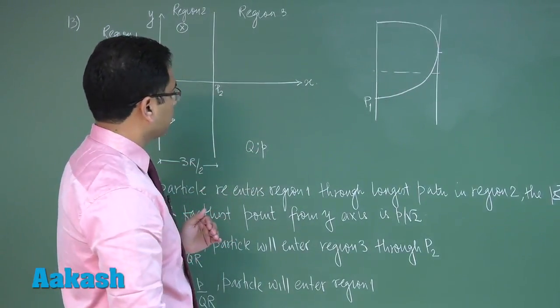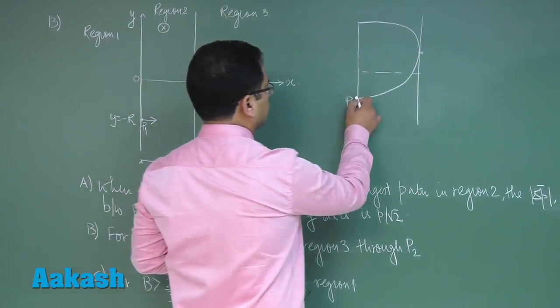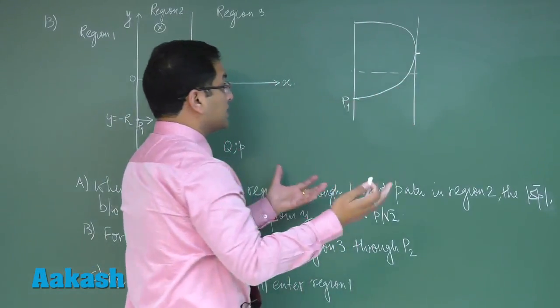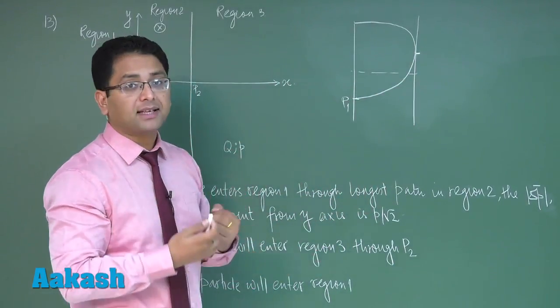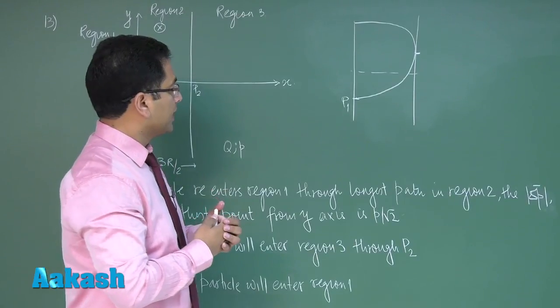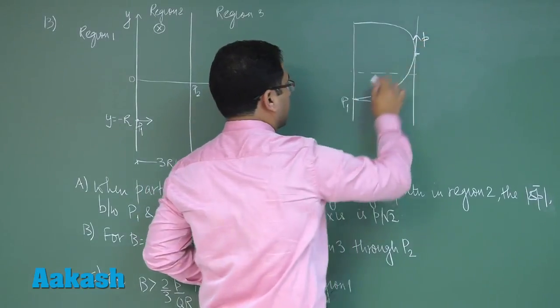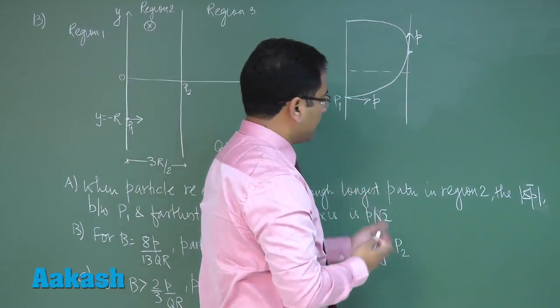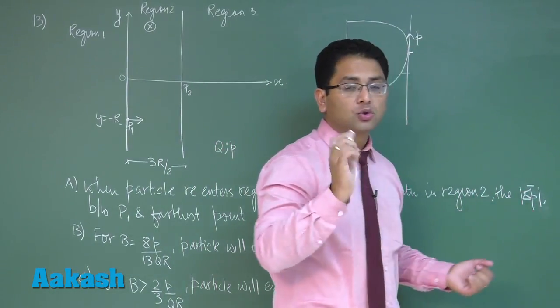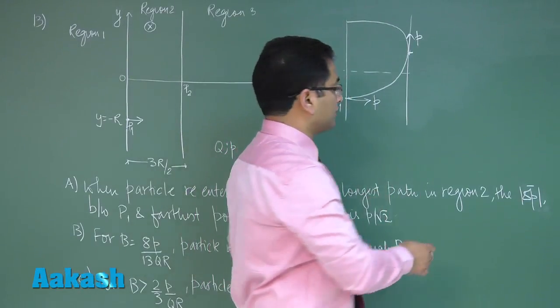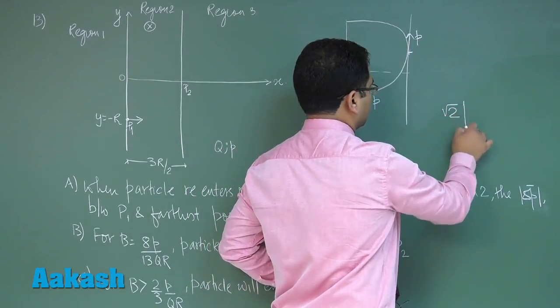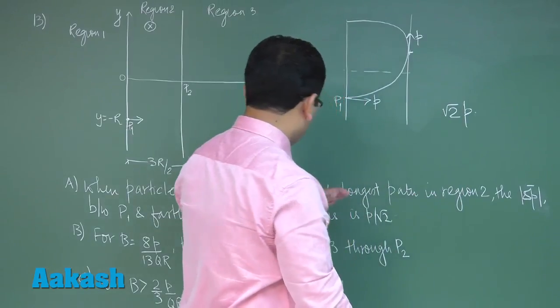Now we need to calculate the change in magnitude between this point and this point, the change in momentum's magnitude more precisely. Here the momentum magnitude is p and here is p. The change in vector would be root 2 times p, the magnitude of the change in vector is root 2 times p and the option is suggesting p by root 2.